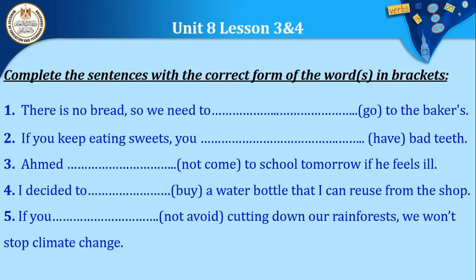Complete the sentences with the correct form of the words in brackets. One: 'There is no bread, so we need to go to the baker's.' Two: 'If you keep eating sweets, you will have bad teeth.' Three: 'Ahmed will not come to school tomorrow if he feels ill.' Four: 'I decided to buy a water bottle that I can reuse from the shop.' Five: 'If you do not avoid cutting down our rainforests, we will not be able to stop climate change.' Brilliant! Good job!